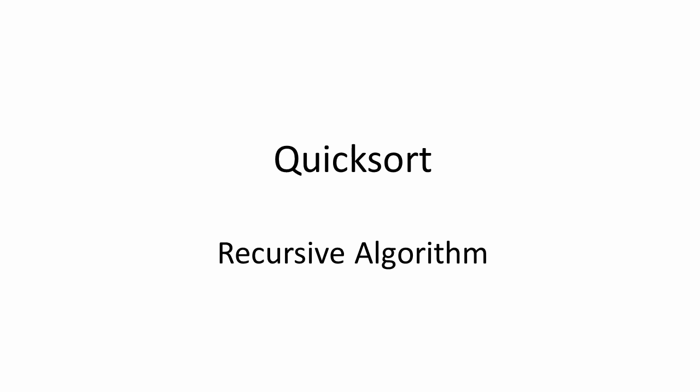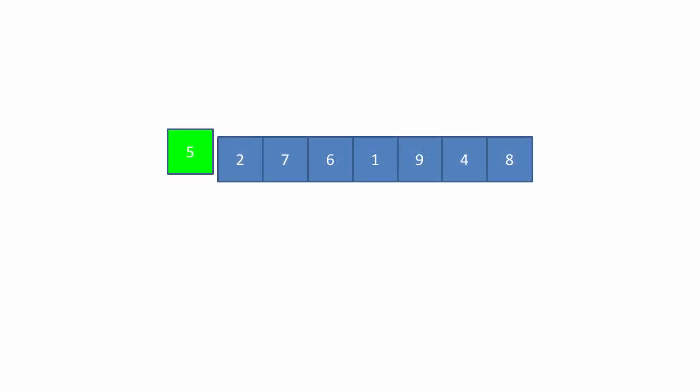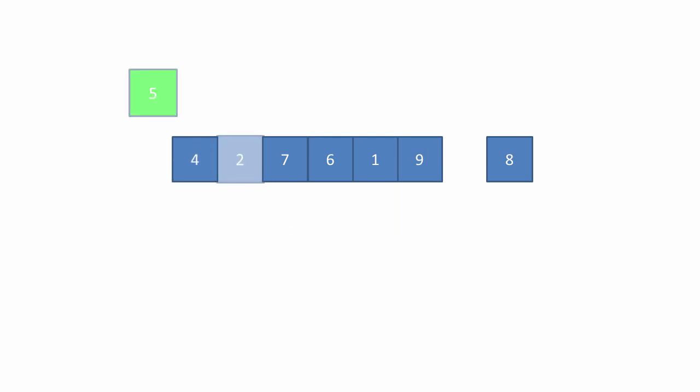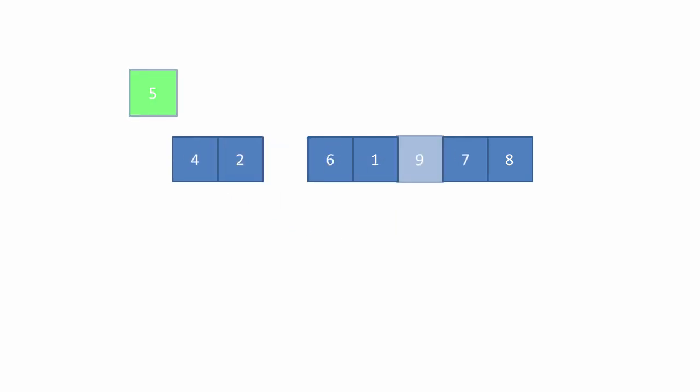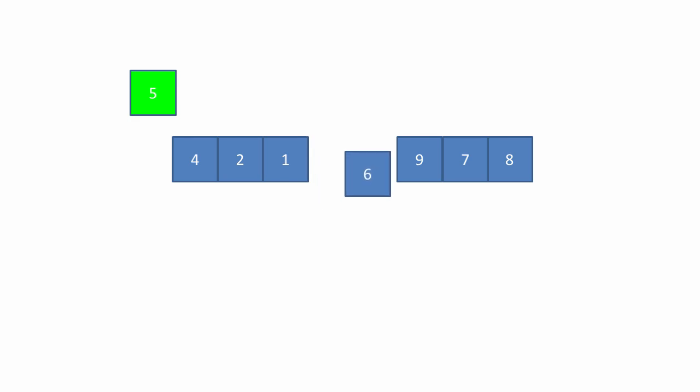The first quicksort partitioning algorithm relies on the selection of a pivot value, which is used to partition an unordered list into three sublists. The leftmost item in the list is chosen to be the pivot. Then, items at left and right pointers are compared with it and data is moved accordingly.